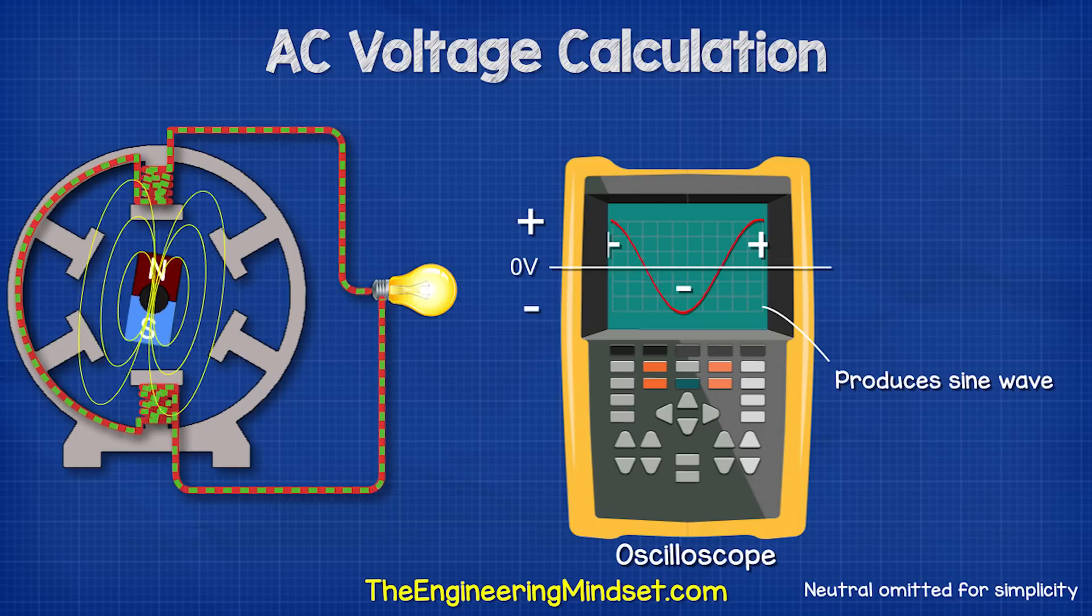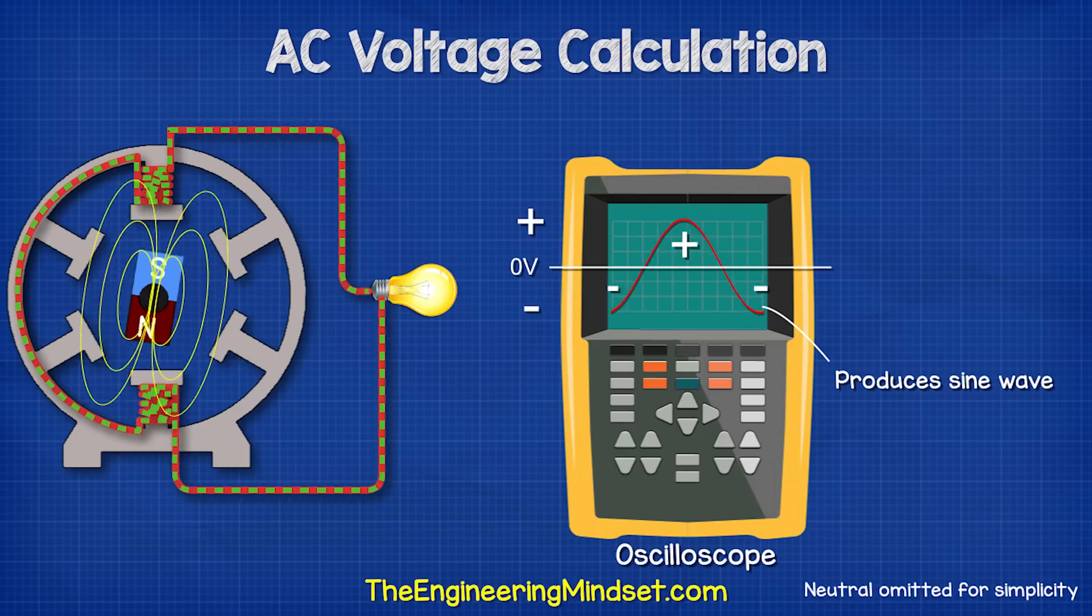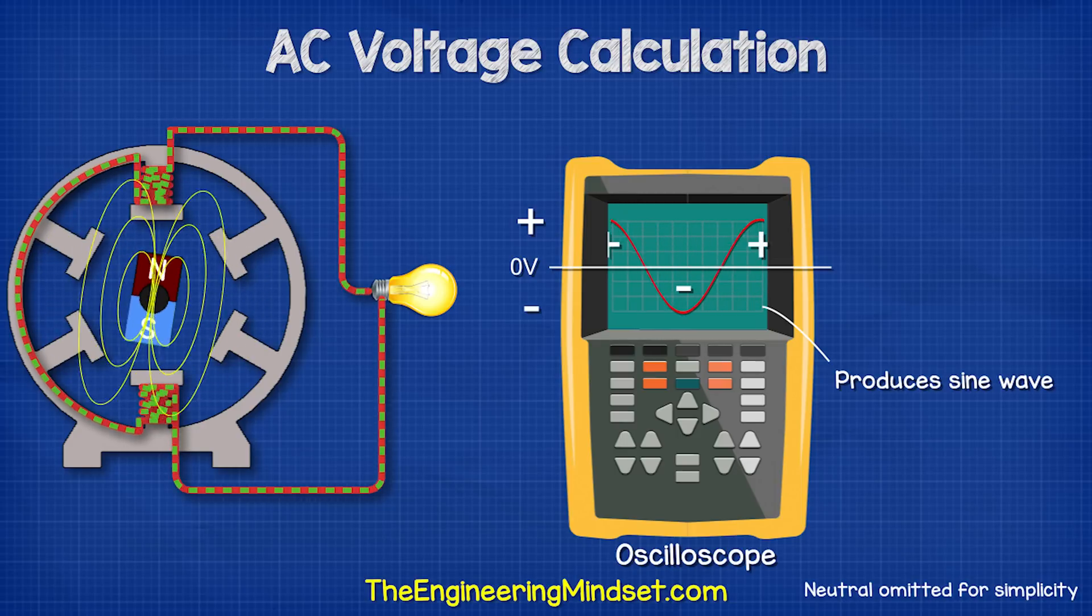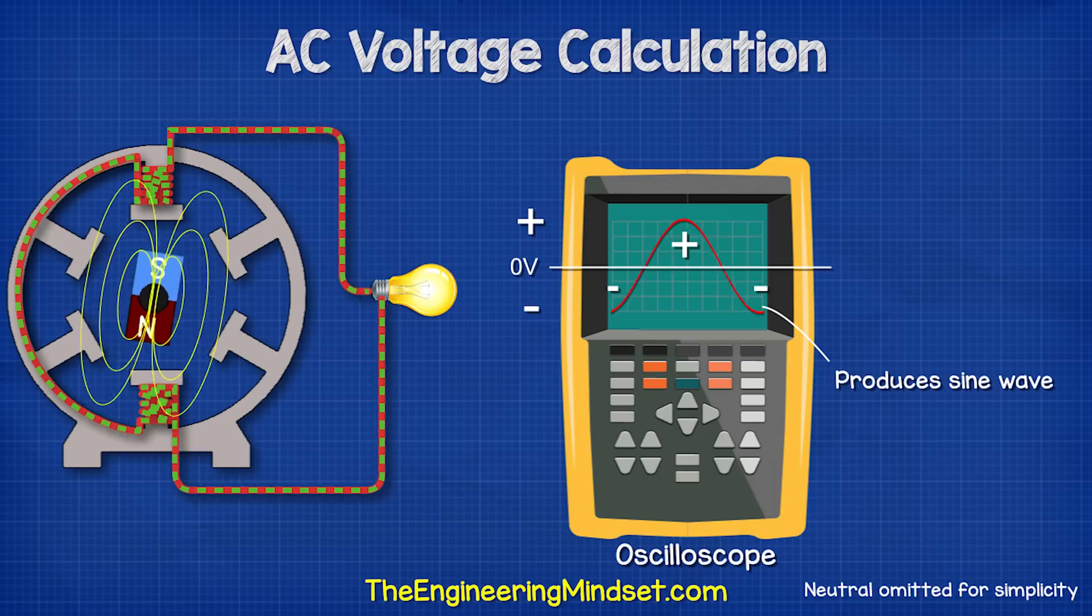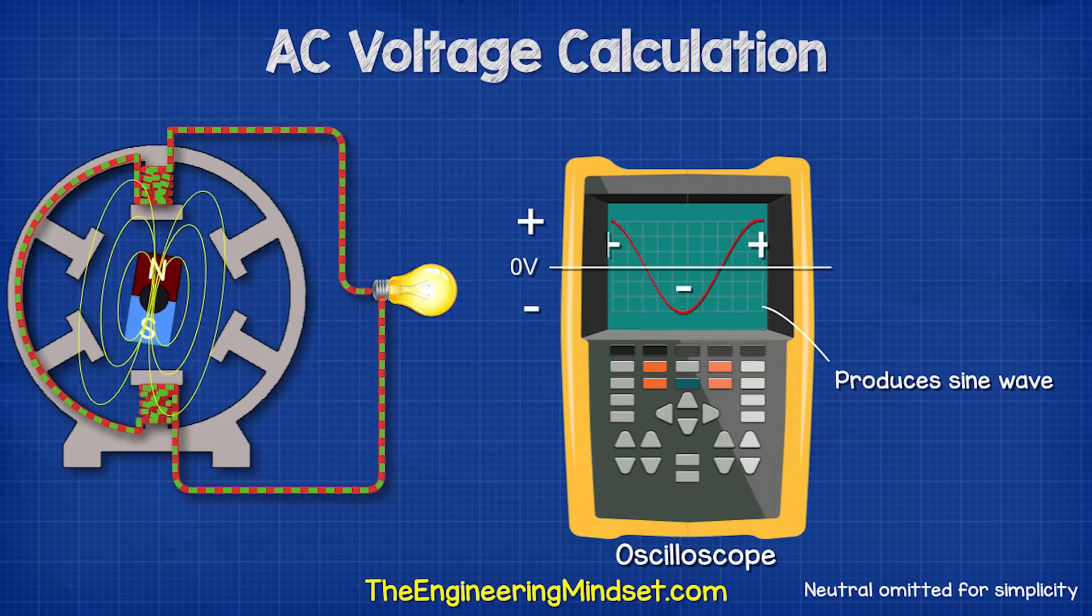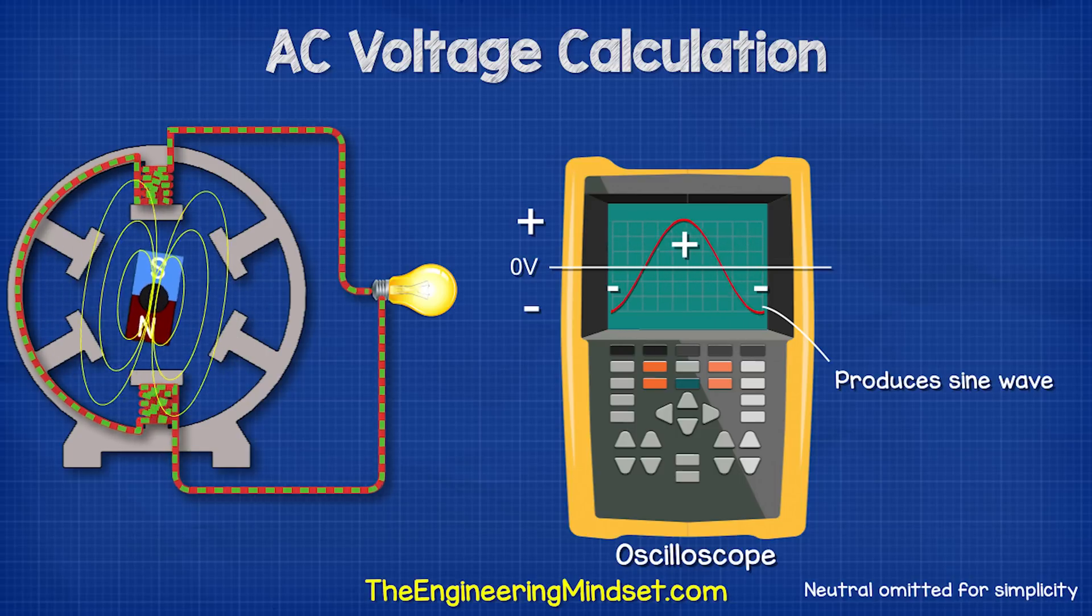The voltage changes between a peak positive and a peak negative value as the maximum intensity of the magnetic field passes the coils of wire inside the AC generator.